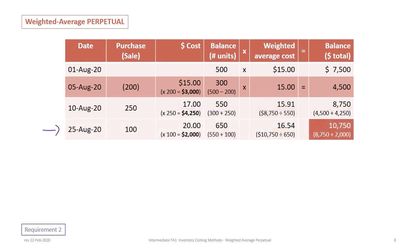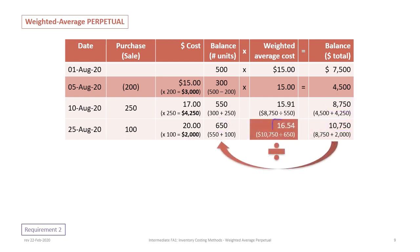We illustrate this again with another purchase on August 25th: 100 units at a cost of $20, totaling $2,000, for a new total of 650 units. The total inventory value is now $10,750 — beginning with $8,750 after the previous purchase plus the $2,000 from this purchase. Dividing $10,750 by 650 units gives us a new average cost of $16.54. This increase makes sense because the second purchase price is higher than the prior average, continuing to push the average cost up.